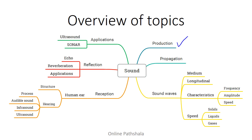Then we look at the second aspect: once the sound is produced, how does it travel from the source to the receiver? The receiver is the human ear, because we all hear sound through our ears. So how does sound propagate? We'll look at the basic idea of sound propagation.